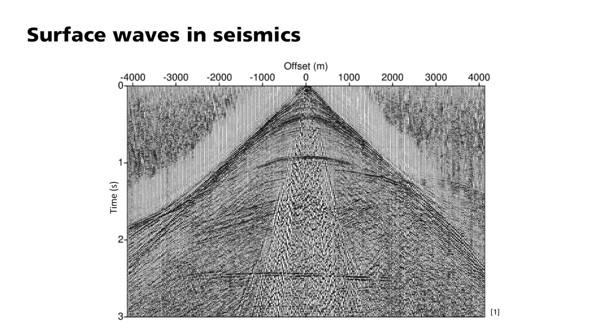After the significant impact of P waves, another wave impacts somewhat later. These are referred to as surface waves. They arrive at the geophones later than the body waves and have relatively high amplitudes.